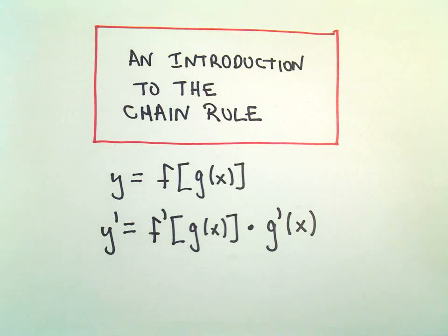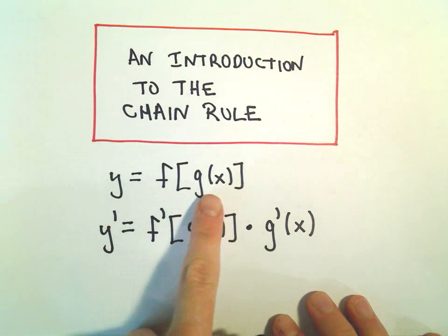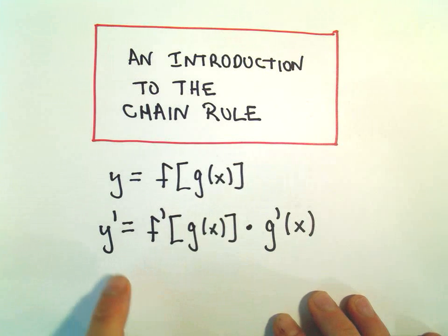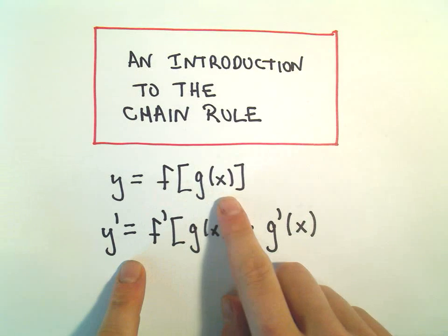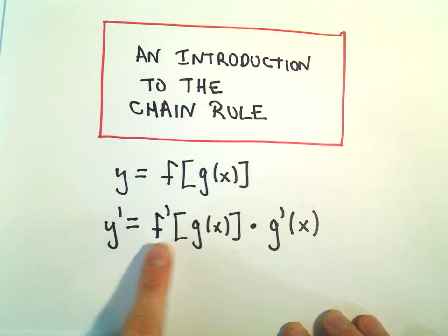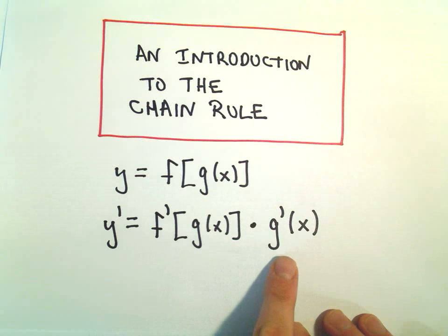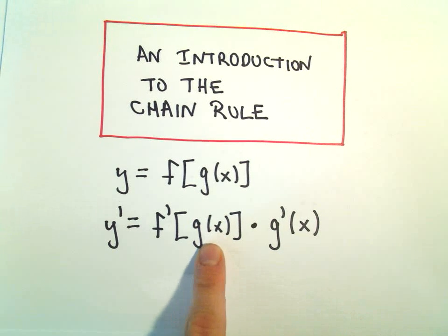The chain rule says, basically when you have a composition of functions, f of g of x, to take the derivative of a function like this, you take the derivative of the outside function and leave the inside one alone, and then the chain rule part, you multiply by the derivative of the inside part.